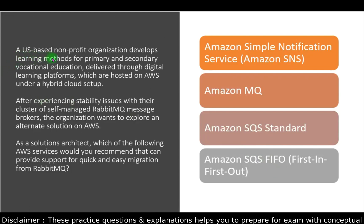Question three: a US-based non-profit organization develops learning methods for primary and secondary vocational education delivered through digital learning platforms hosted on AWS under a hybrid cloud setup. After experiencing stability issues with their self-managed RabbitMQ message brokers, the organization wants to explore an alternate AWS solution. Which AWS service would you recommend that supports quick and easy migration from RabbitMQ?